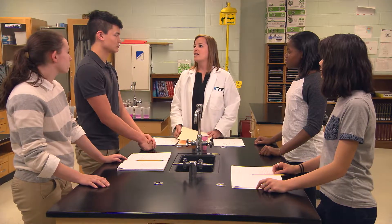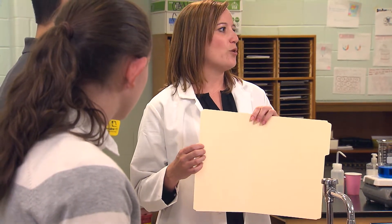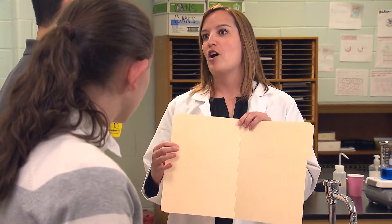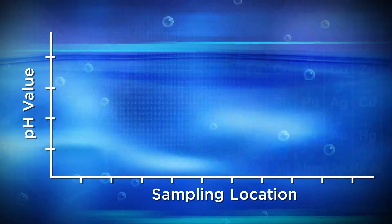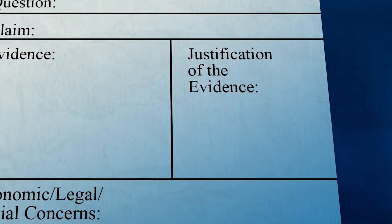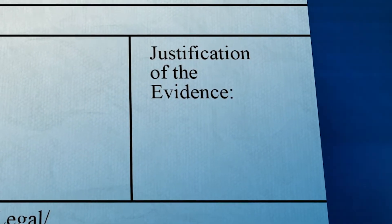Each student team will create a display board that uses the evidence measured in this experiment to make a claim about the cause of the fish kill. Show your display board to the other students and try to explain what you think happened to the fish based on the evidence you gathered. Today we'll use a file folder as your display board, written in a common format. The guiding question is the question you're trying to answer. The claim is what we think caused the fish kill based on our experiment. For the evidence, it would help to draw a graph displaying the data from the experiment. Remember to graph the average pH value from each location. You should label the vertical axis with your responding variable — pH value — and the horizontal axis with your manipulated variable — sampling location. The section called Justification of the Evidence is where you explain what you think the data graph tells us about the cause of the fish kill and why you think the fish died. This is where you must demonstrate sound reasoning.